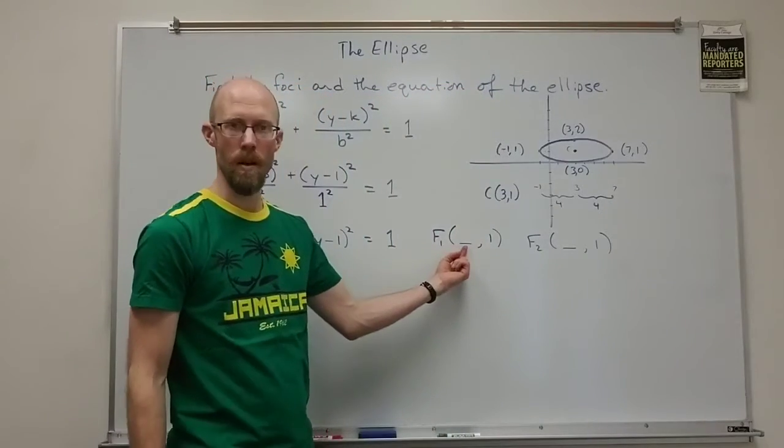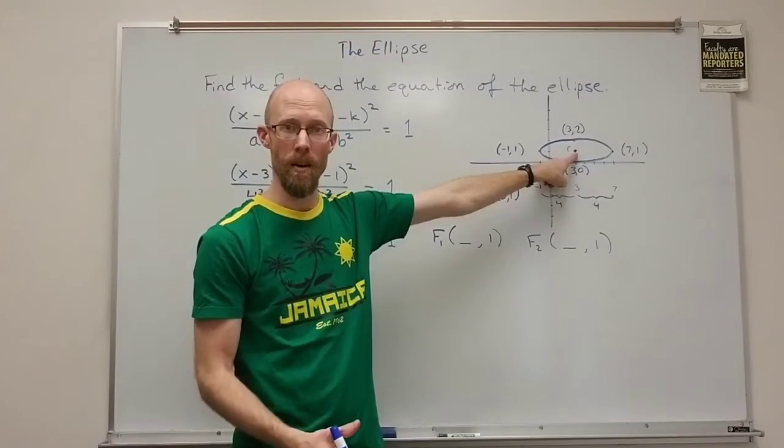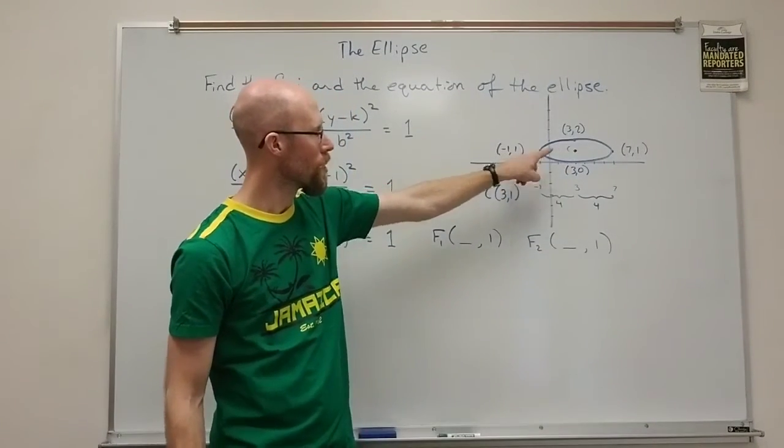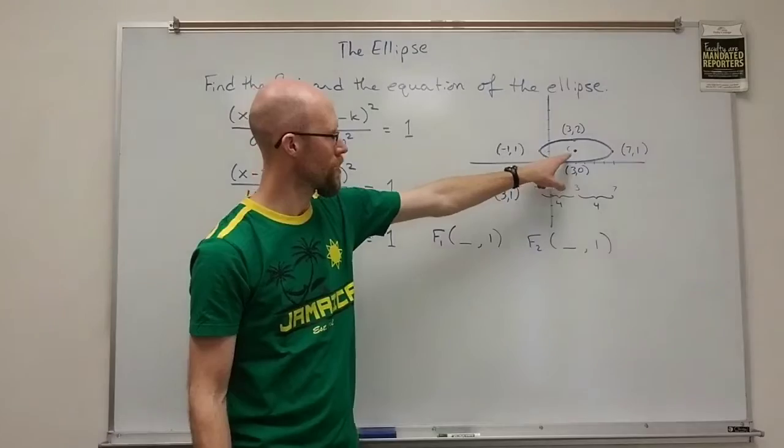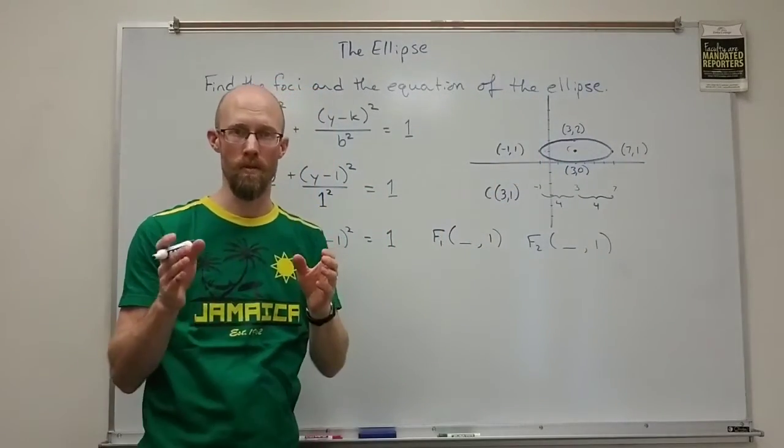Now this something is going to be the x value of the center minus the c value. Now this this c is the big c for center. I'm talking about the little c which is the distance from the center to the focus.